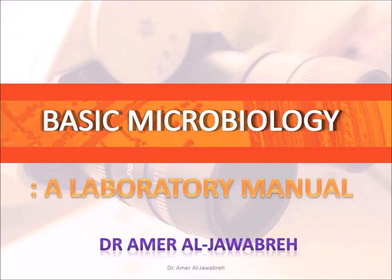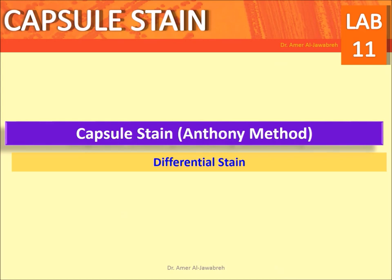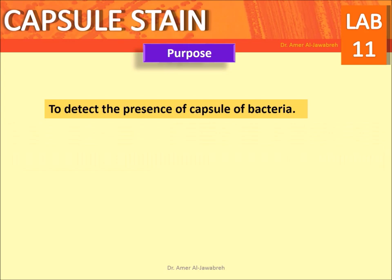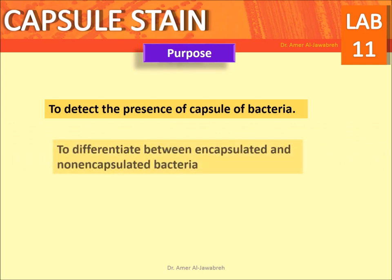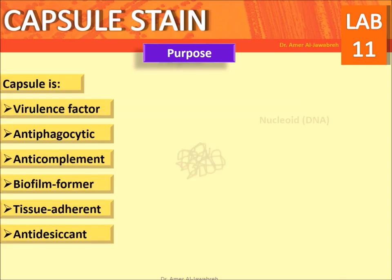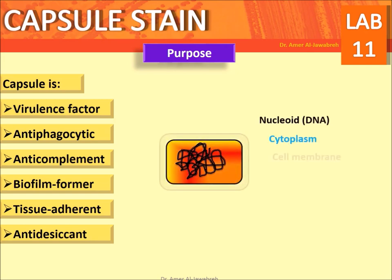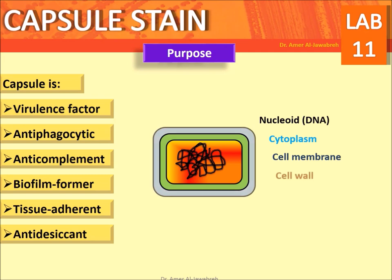Basic microbiology: a laboratory manual — capsule stain, Anthony method. A differential stain. Purpose: to detect the presence of capsule in bacteria and to differentiate between encapsulated and non-encapsulated bacteria. Bacterial structures include DNA, cytoplasm, cell membrane, cell wall, and capsule.